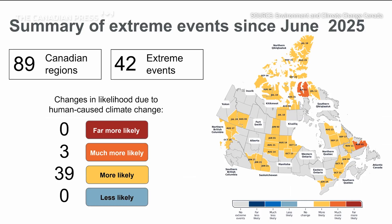The pilot precipitation system has been running and providing attribution results since June 2025. We have compiled a total of 42 events over various regions within Canada, as you can see on the map here. From these events, three were much more likely to occur, while the remaining 39 were more likely to occur because of human-caused climate change.